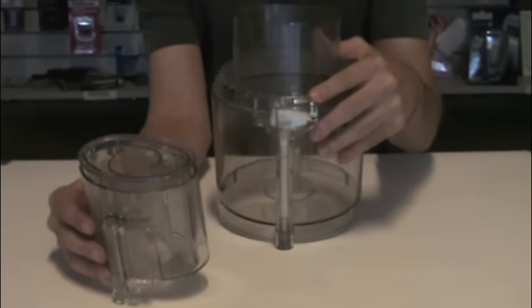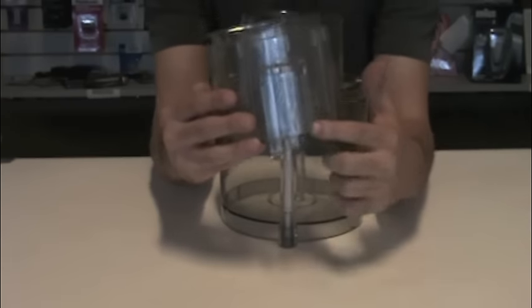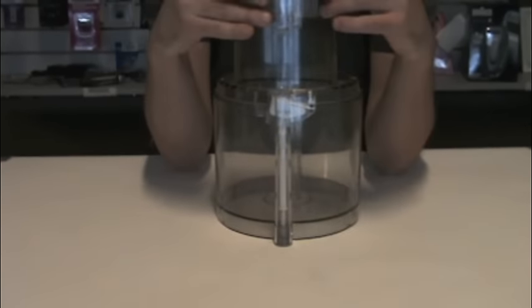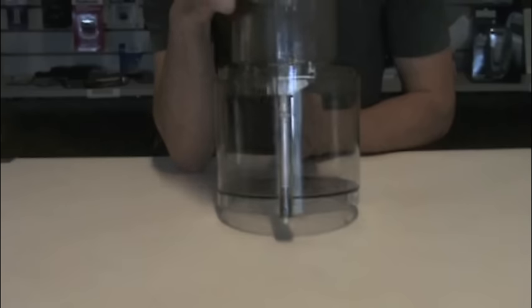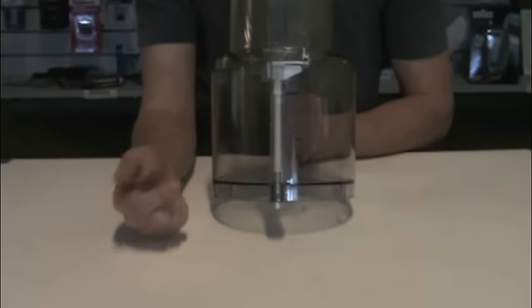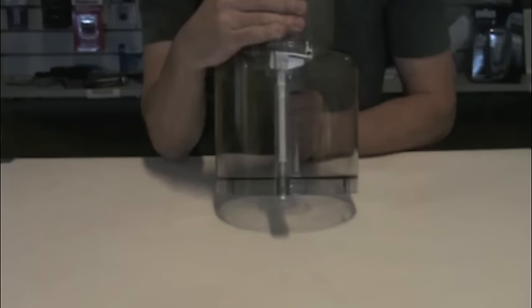The large feed tube is on top. You're going to insert the pusher assembly with the tabs facing the white tabs and push down. You're going to hear a snap and you'll see the white tab protruding from the bottom of the bowl set.